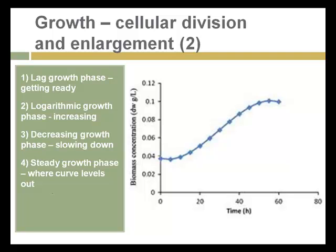Cell growth of a plant occurs in stages. The stage when a plant is small tends to be slow, but when seedlings grow that growth rapidly increases. Then as plants begin to mature and bear fruit, that growth slows down and becomes more steady over the life of the plant.